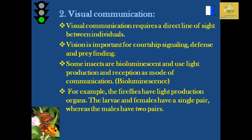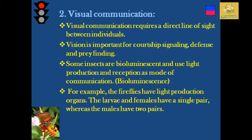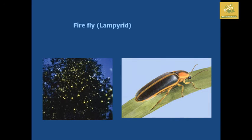Visual communication is the second form of communication in insects, requiring a direct line of sight between two insects. Vision is important for courtship signaling, colony defense, and prey finding. Some insects are bioluminescent and use light production and reception as a mode of communication, known as bioluminescence. Fireflies have light production organs — larvae and females have a single pair, while males have two pairs of light-producing units.